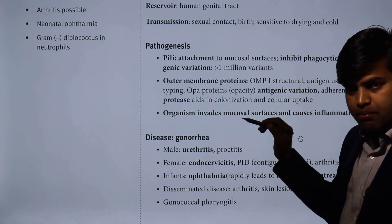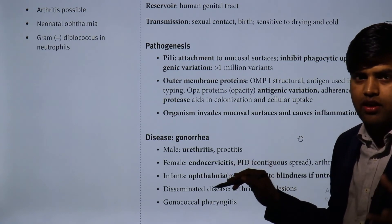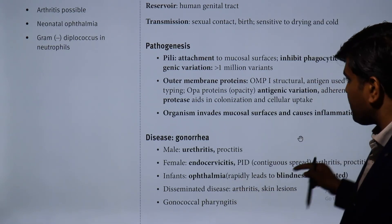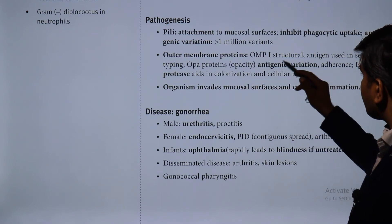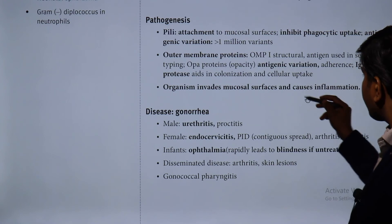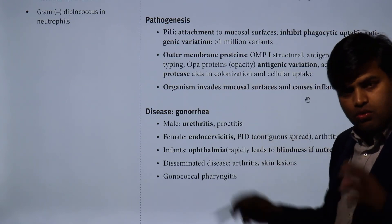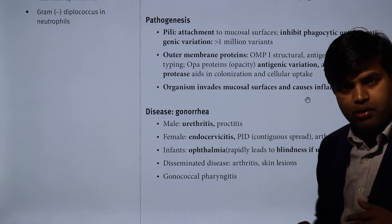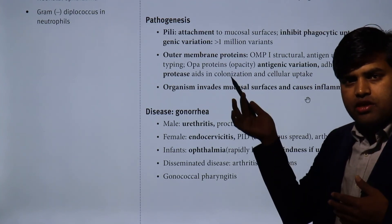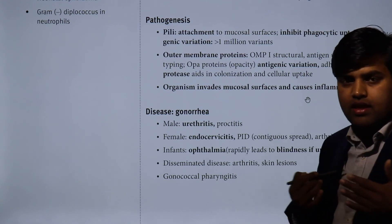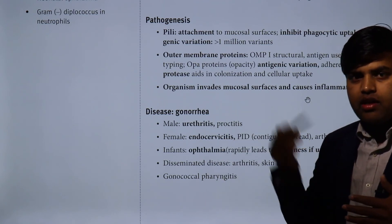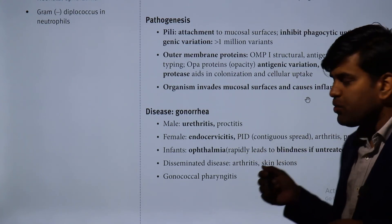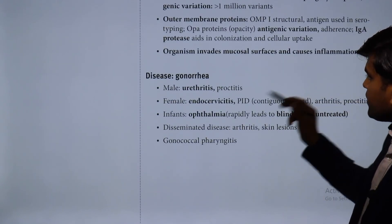The lack of a feasible vaccine makes N. gonorrhoeae a high-yield topic in USMLE and board exams worldwide. Virulence factors include outer membrane protein (OMP1), used in serotyping; Opa (opacity) proteins showing antigenic variation; and IgA protease. IgA protease is necessary because without it the organism cannot invade the mucosal membrane's IgA protective layer. Just as N. meningitidis needs IgA protease to infect the respiratory tract, N. gonorrhoeae needs it to invade the genitourinary tract and cause inflammation.